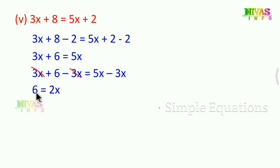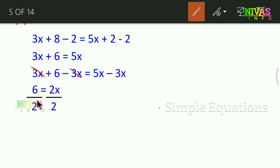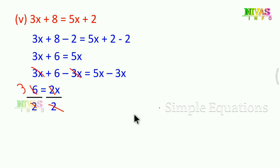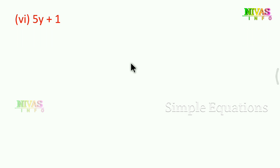We divide both sides by 2: 6 divided by 2 is 3. So x is equal to 3. That is the answer. Next question: 5y plus 10 is equal to 4y minus 10.